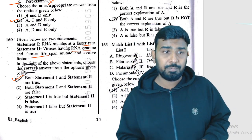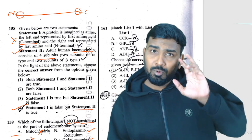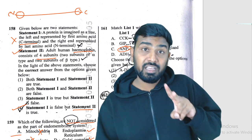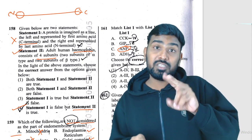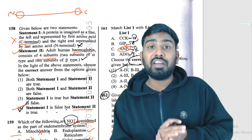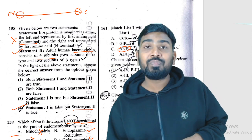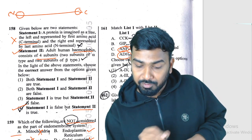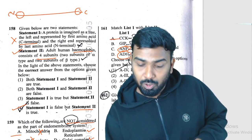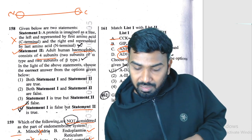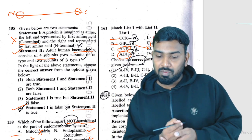Question 161 is from the digestion chapter — kidney function regulation. ANF stands for atrial natriuretic factor; atria is related to the heart. ADH (vasopressin) is related to the kidney. CCK — cholecystokinin — is related to the pancreas and gastric system. Seeing 'gastric' in the options gives a direct match, so Q161 is solved.